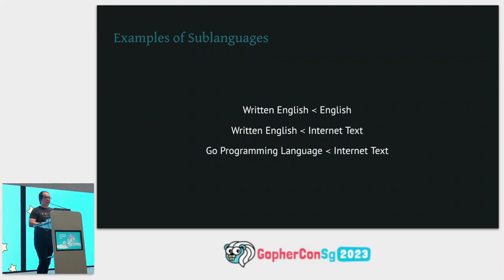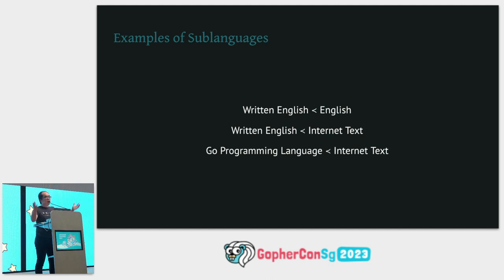Here I list some examples of sub-languages. Despite the simplicity of this slide, I think it captures a lot of the essence of what I'm going to explain. The key thing to note is that I list internet text as a language — all the text on the internet follows a set of rules. All the code on GitHub is written in different programming languages, but they're all still subsets of all internet text.